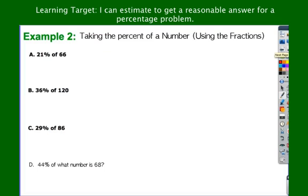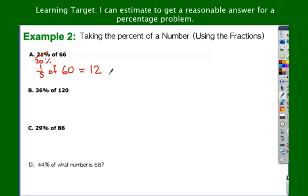21% of 66. I've got the percent and a number, so now I'm looking for a number. I want to round the percent to one I know the fraction for. 21% rounds to 20%, because 20% is one-fifth. Multiplying by one-fifth is the same as dividing by 5. So I want to change 66 to an easy multiple of 5. I'll go with 60 — 60 divided by 5 is 12. If you use 65 you get 13. It's an estimate, so we're close.